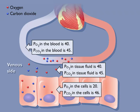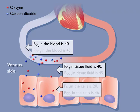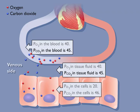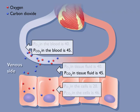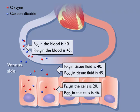At the venous ends of tissue capillaries, the PO2 in the blood is equal to the PO2 in the tissue fluid, and the PCO2 in the blood is equal to the PCO2 in the tissue fluid, resulting in no more net movement of O2 or CO2. The blood now carries the O2 and CO2 to the lungs.